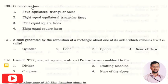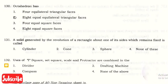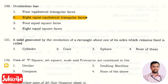The next question is: the octahedron has? The right option is option three, that is 8 equilateral triangular faces.